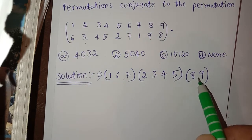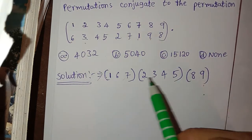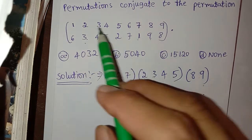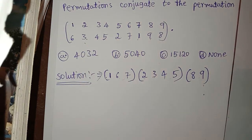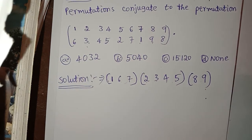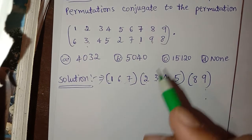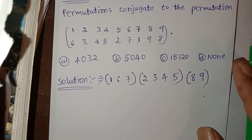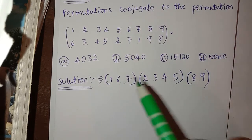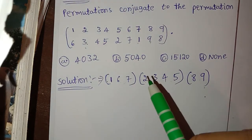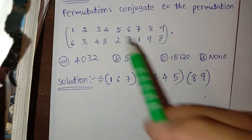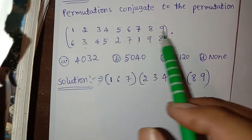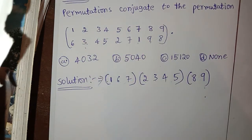These are the disjoint cycles which give the product of this permutation. Now we have to find out how many permutations are conjugate to the given permutation.